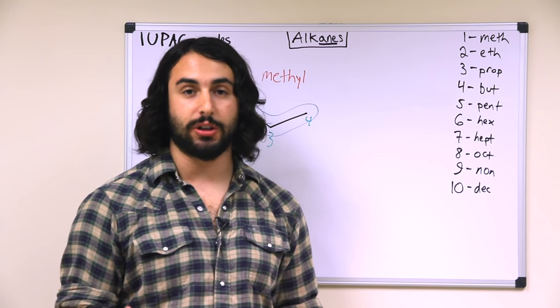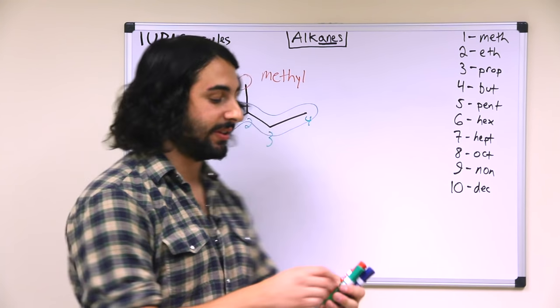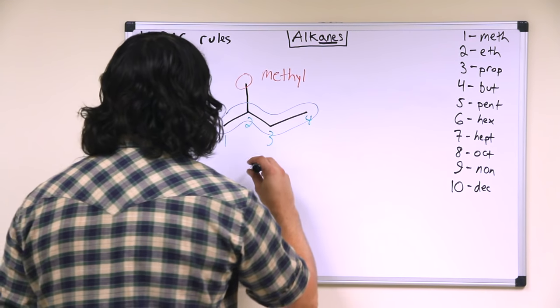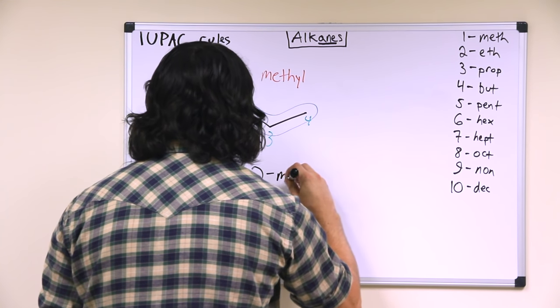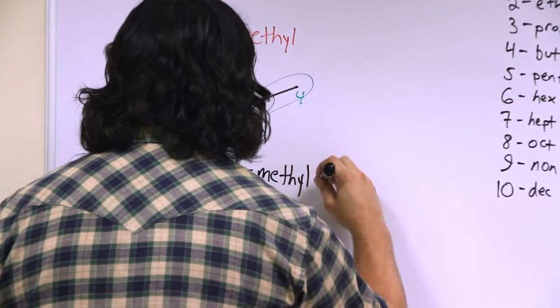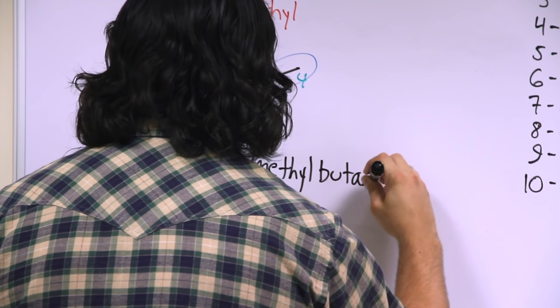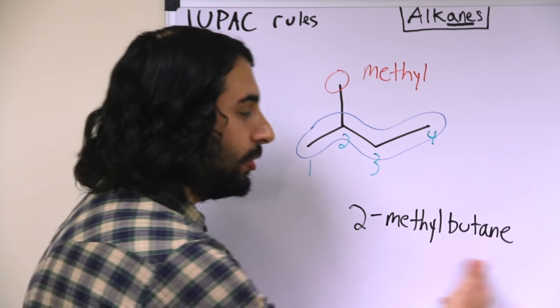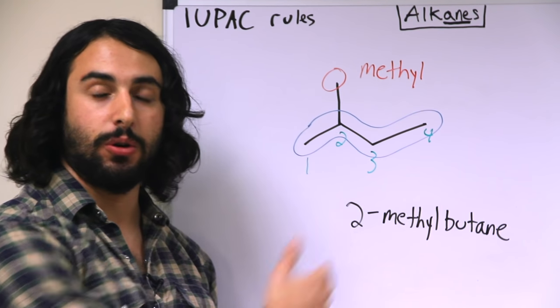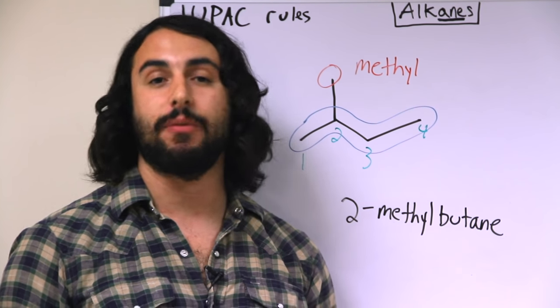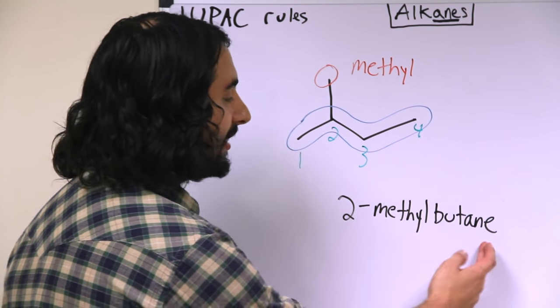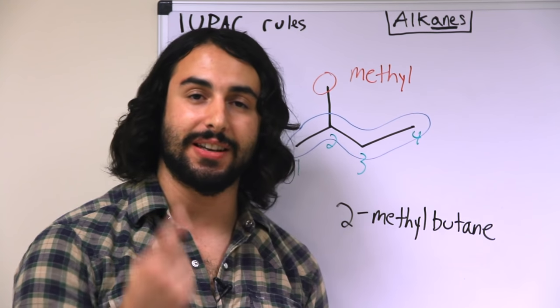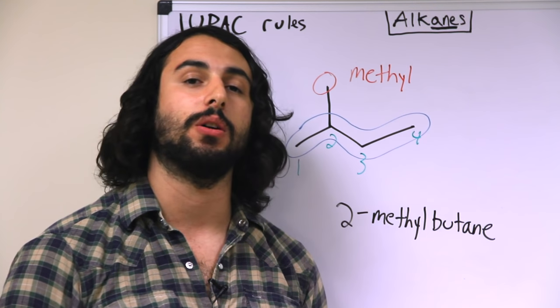So now we're going to go ahead and name this molecule, and we have to list the substituents. We only have one, so it's going to be easy. We have to state the location, so we are going to call this 2-methylbutane. So anybody anywhere around the world could read 2-methylbutane and be able to draw this molecule because it is describing unambiguously everything about the molecule. Butane is telling us that it is a 4-carbon hydrocarbon. 2-methyl is telling us that there is a methyl group, and it is telling us where it occurs on the molecule.